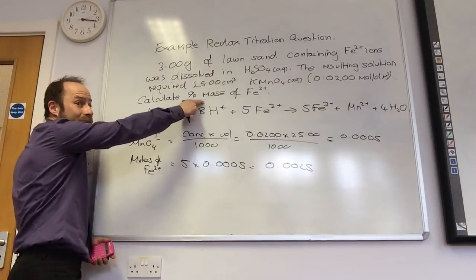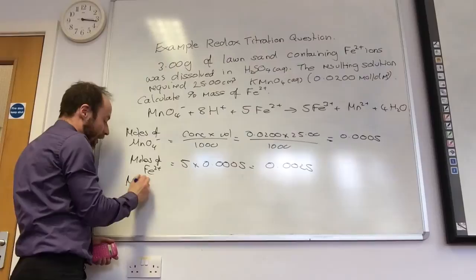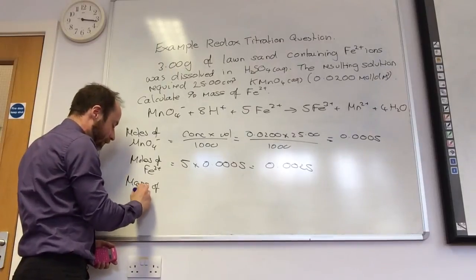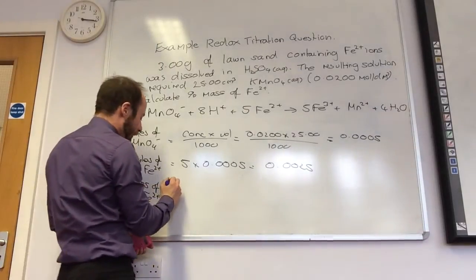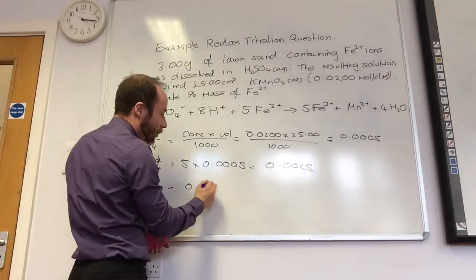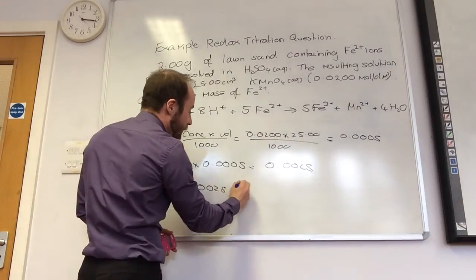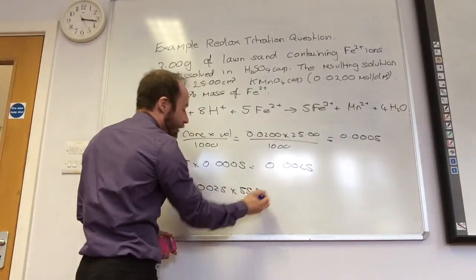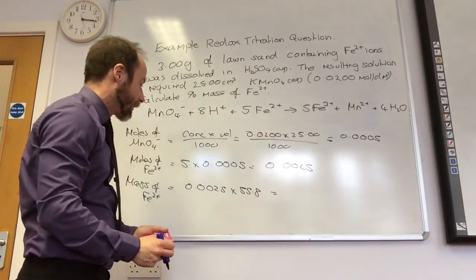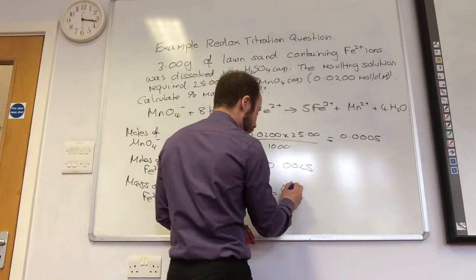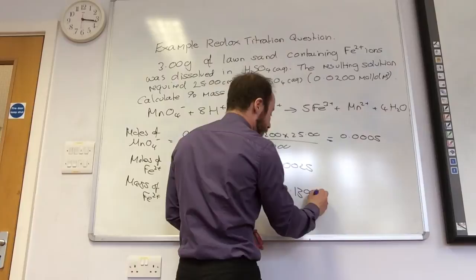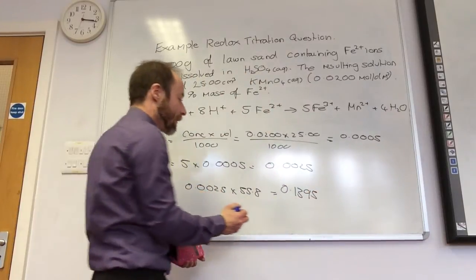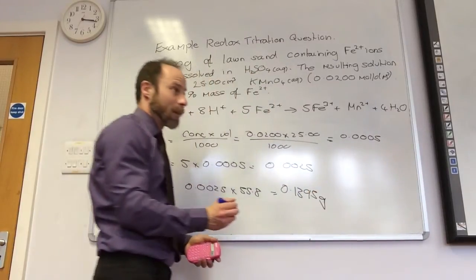They want percentage of mass. So, convert it into mass. Times by... Yeah. So, it's going to equal 0.0025 times 55.8. 0.1395. Sorry. Grams. Grams, yeah.